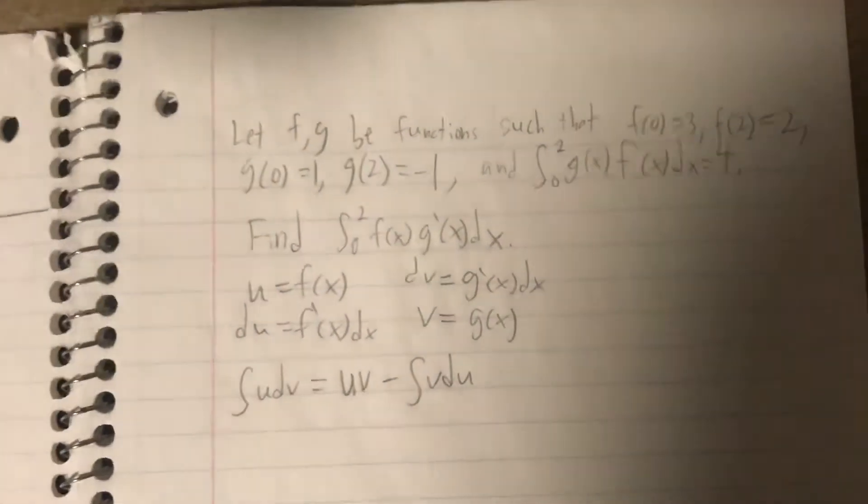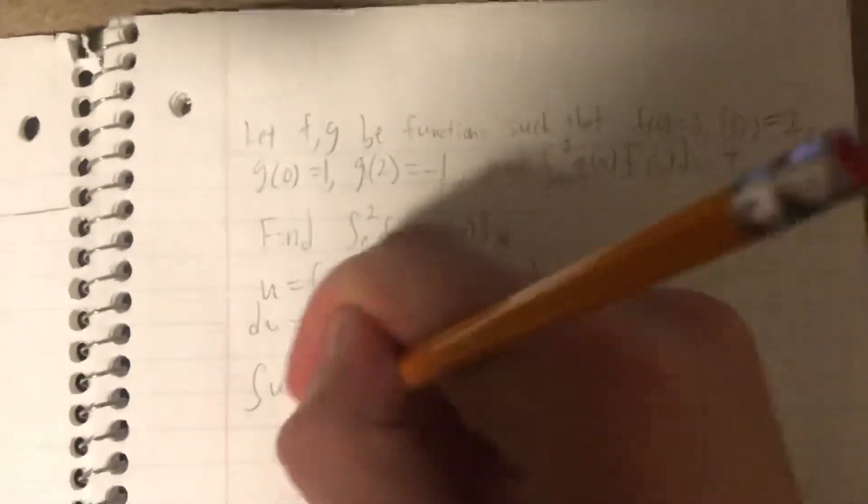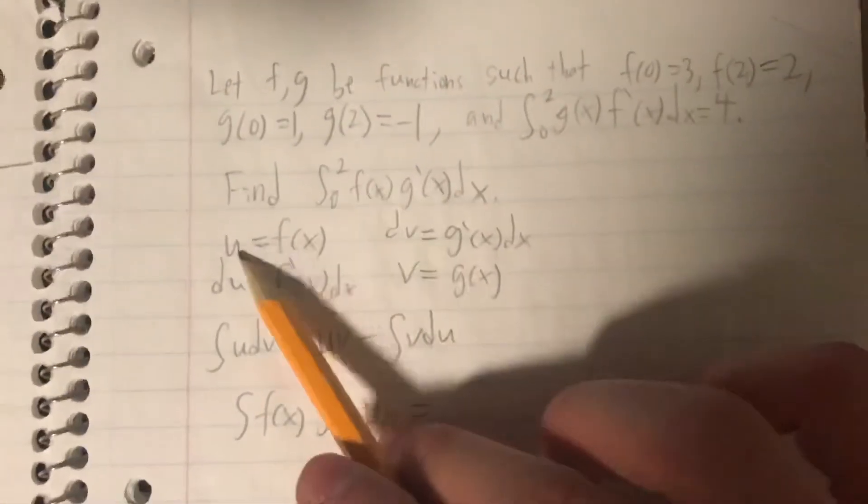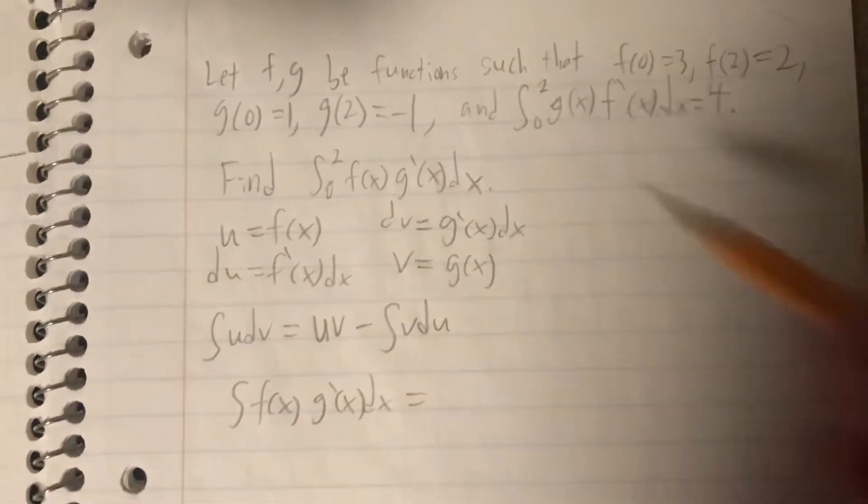So, let's try that here. So, the integral of f of x g prime of x dx would be equal to u times v, so u, which is f of x, times v, which is g of x,